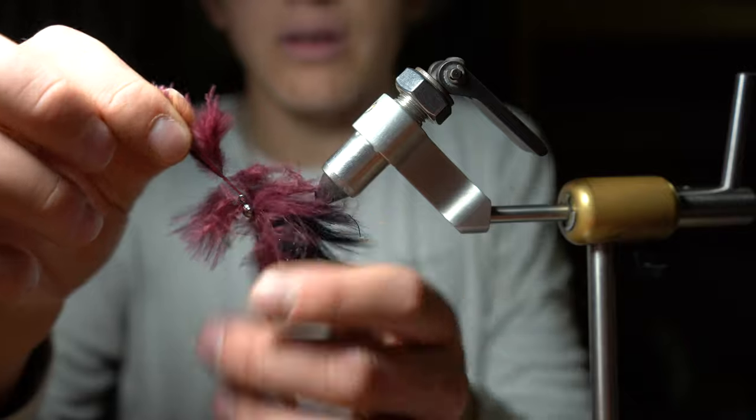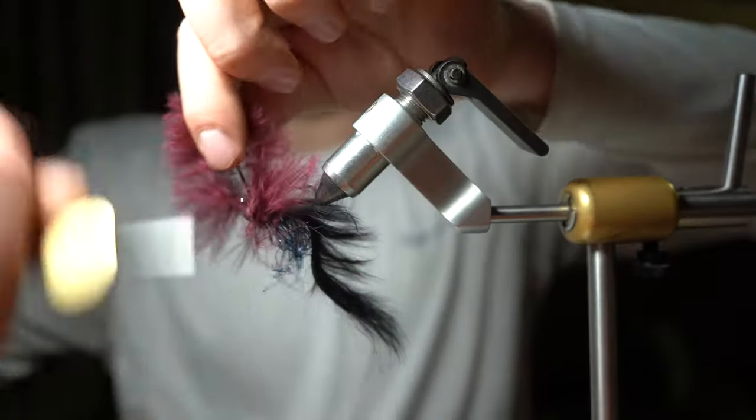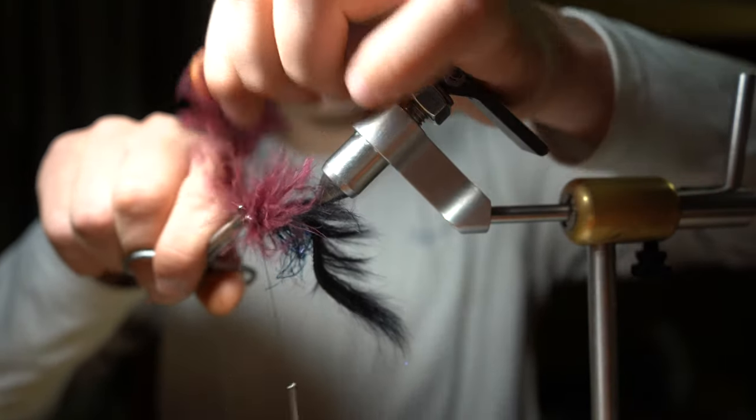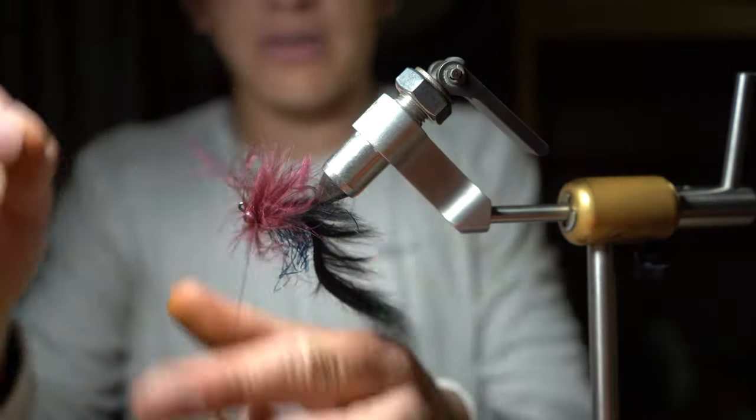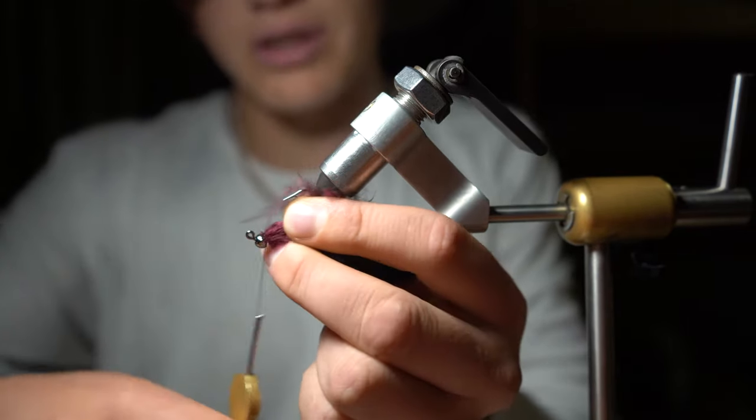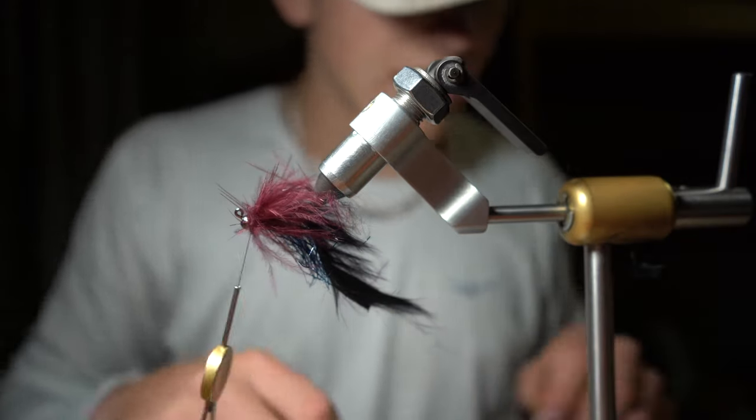That's about one and a half wraps there. Secure that stem down, trim, feel your hairs out so they separate and pull back like this, and give some final good secure wraps and end with a whip finish.